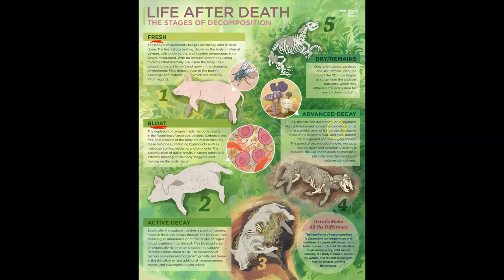Advanced decay is where fungi start coming in — those are obviously decomposers. Not only are the insects and bacteria working to advance the decomposition, but you also have fungus in there as well. Eventually you get to dry remains, where there is no flesh or soft moist component — it is just dry skin, dry remnants of skin and bones. So we go fresh, to bloat, to active decay, to advanced decay, to dry remains.